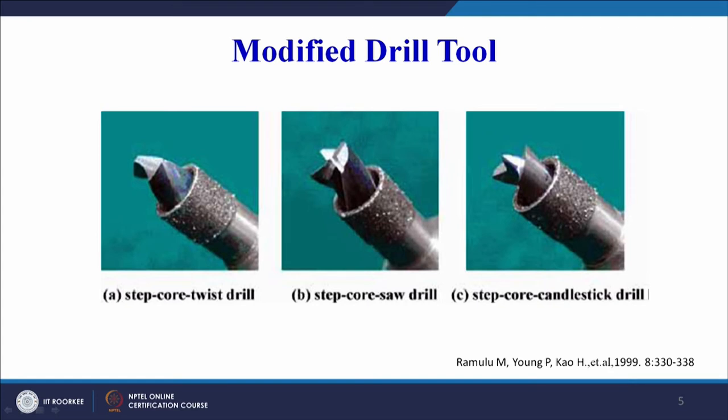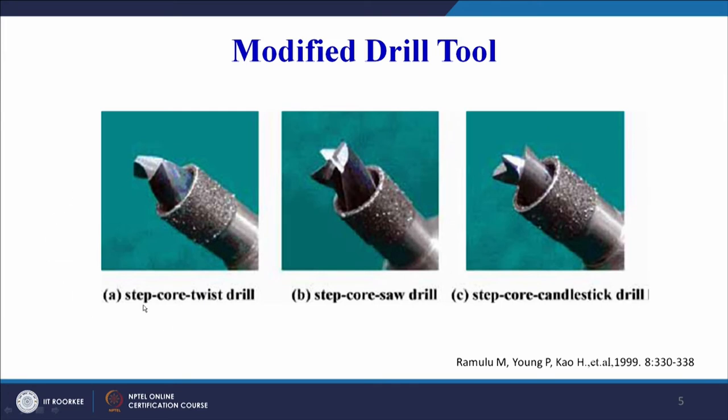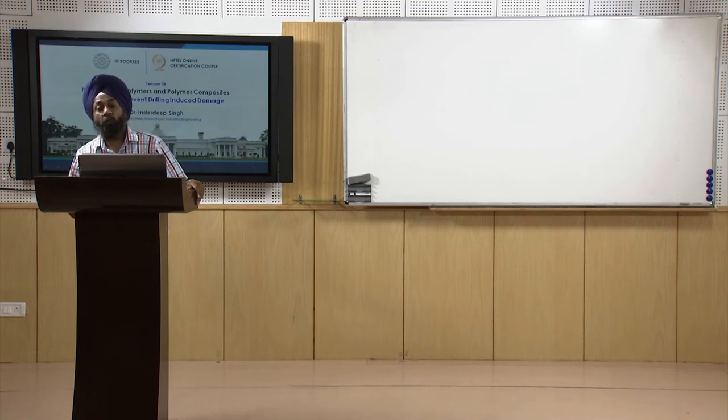An article by M. Ramulu, P. Young, and H. Cow published in 1999 investigated three different drill point geometries: the step core twist drill, step core saw drill, and step core candlestick drill. Different types of geometries have been tried to avoid damage around the hole in case of polymer matrix composites, and more specifically fiber reinforced plastics. By now, all learners should be able to appreciate the importance of drill point geometry as a key criterion in defining drilling performance for polymer matrix composites.